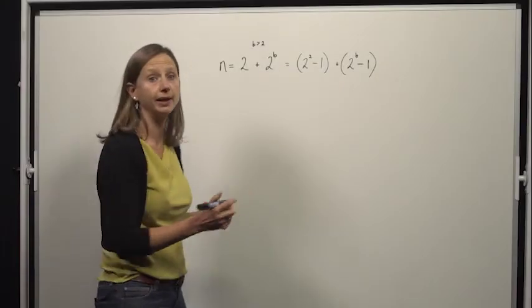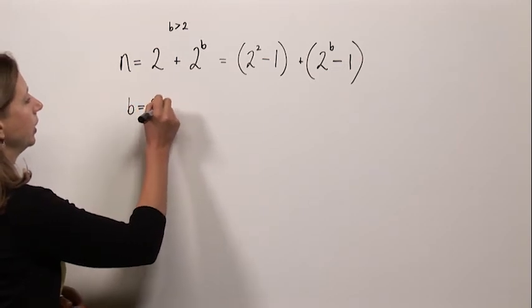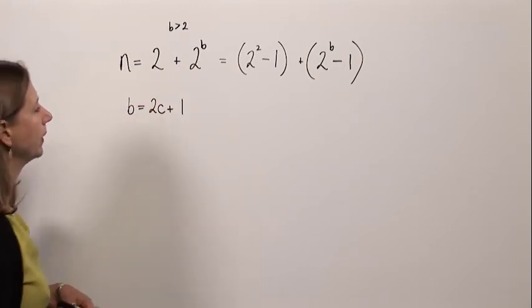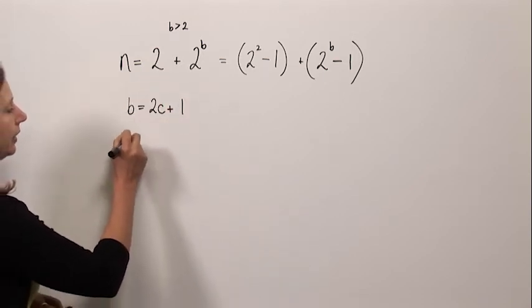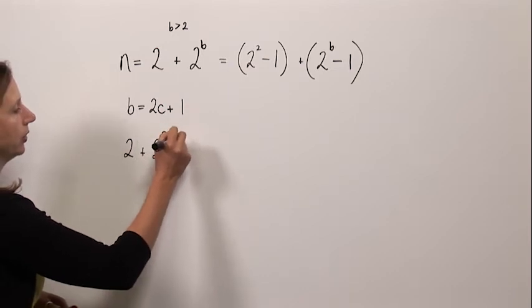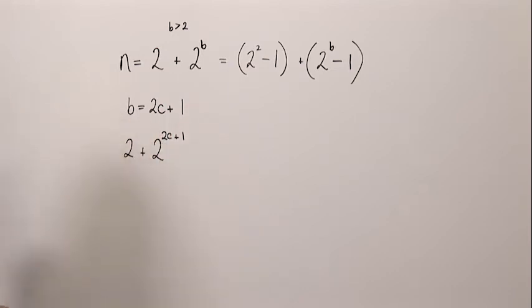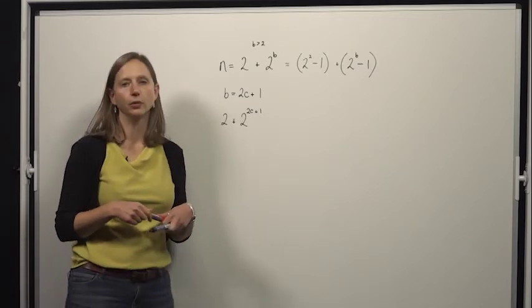So we know now that b is odd. And so I'm going to let b equal two c plus one, where c is a natural number. Now we're looking at the number n, that is two plus two to the two c plus one. And we're trying to show that this is equal to the sum of two squares.